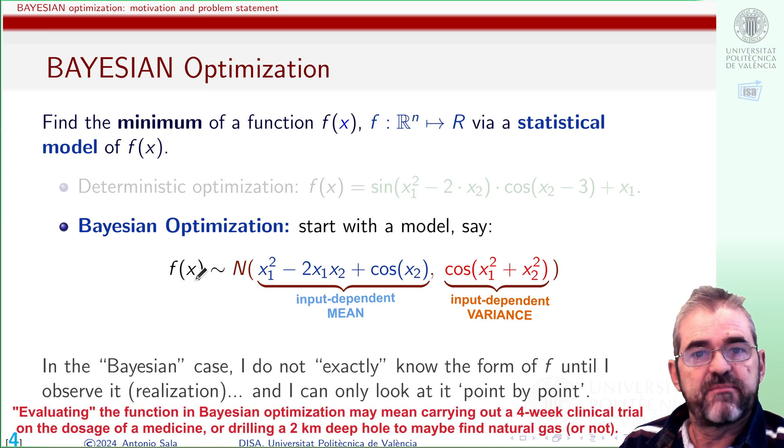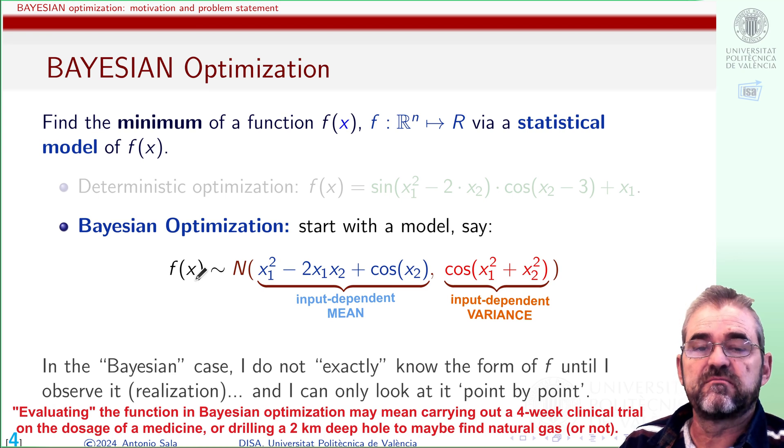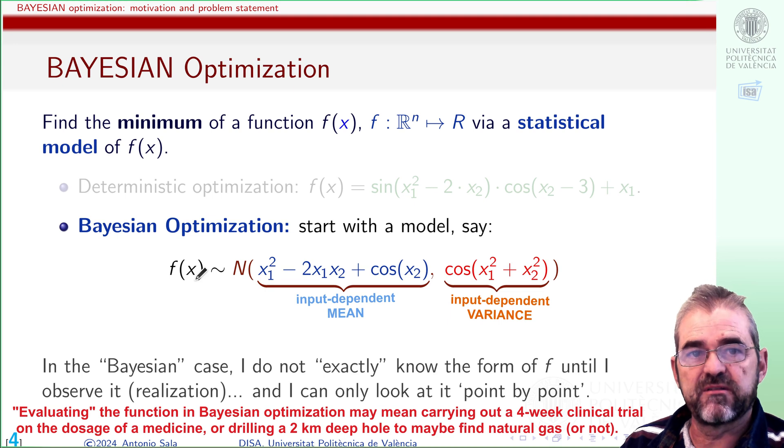I mean the same happens with deterministic optimization isn't it? Yes it is but in deterministic optimization they assume that knowing the value and the derivative at some point I can extrapolate to other points, but in this Bayesian optimization the stuff is carried out with formulas for random variables. In the next video we'll discuss the most suitable application domains for each of the techniques.